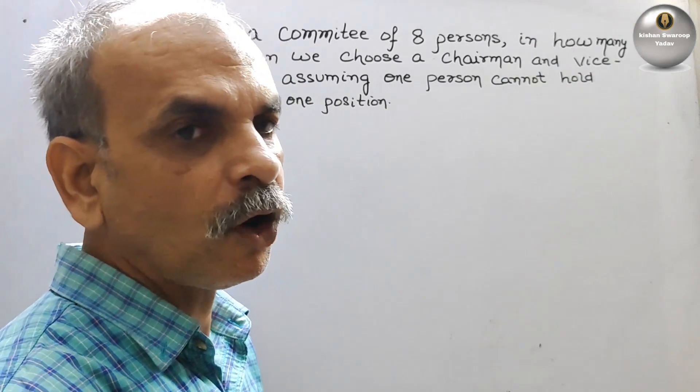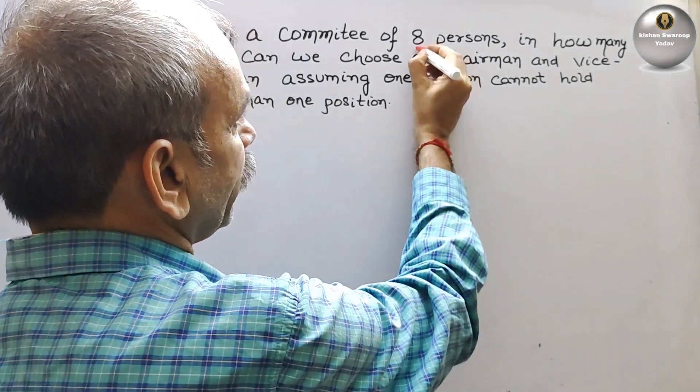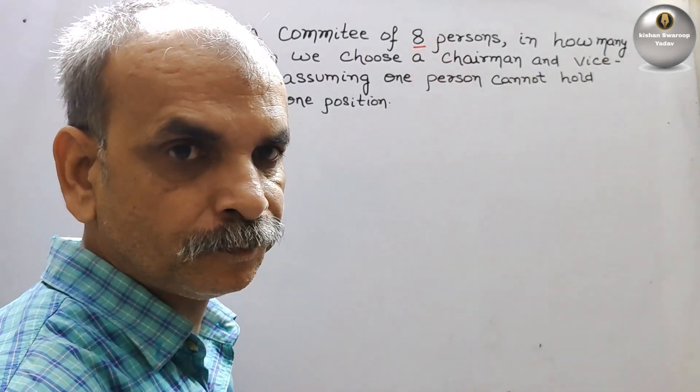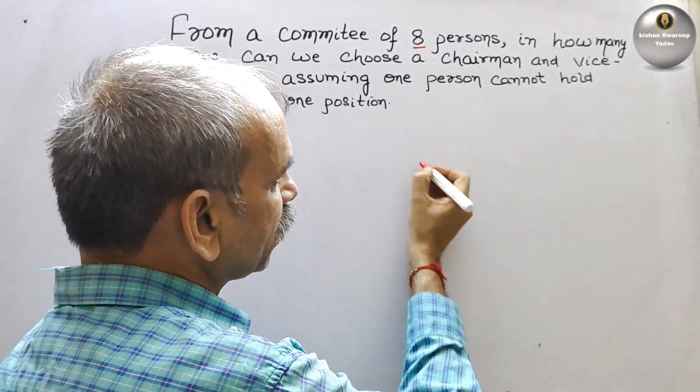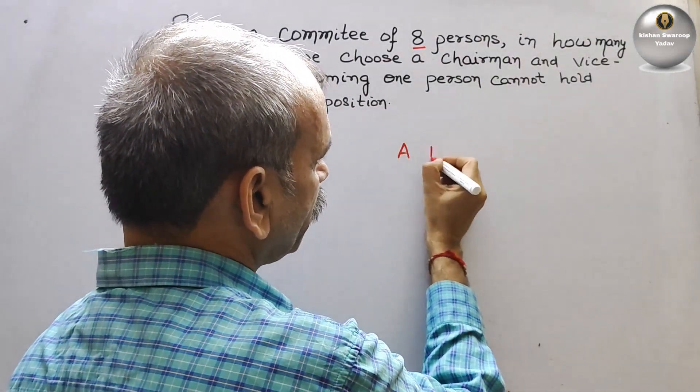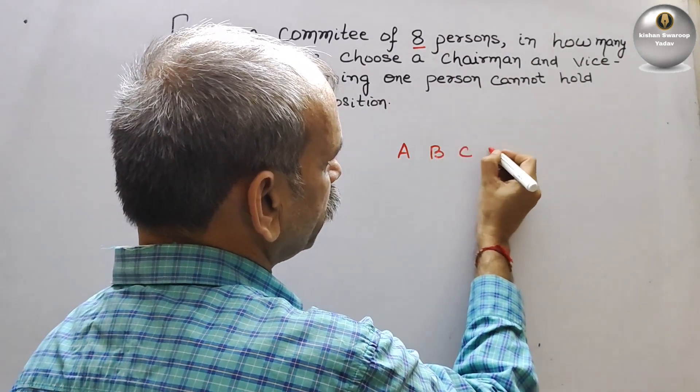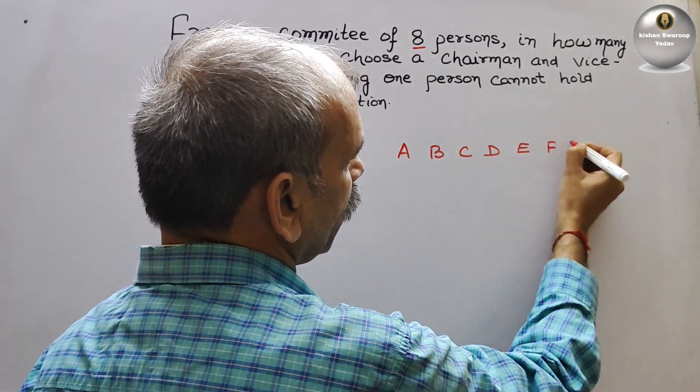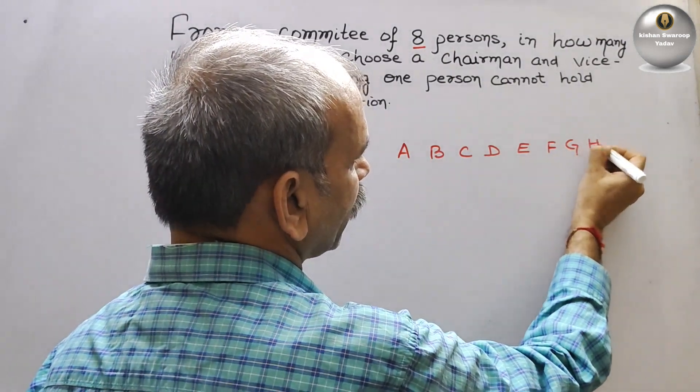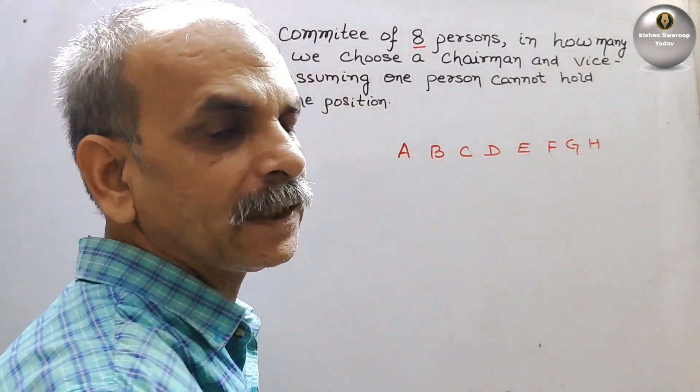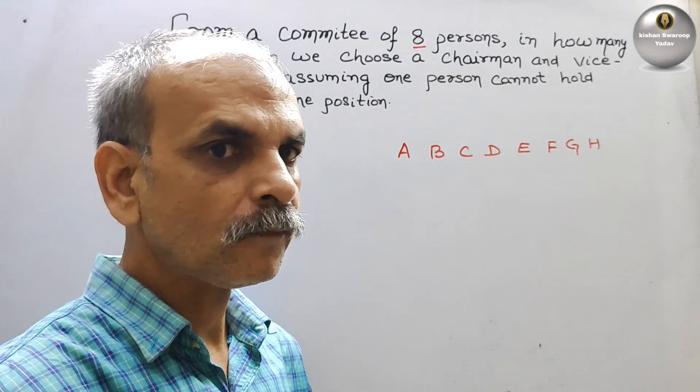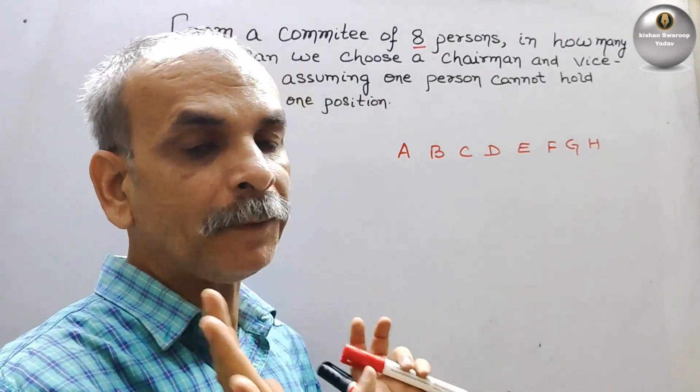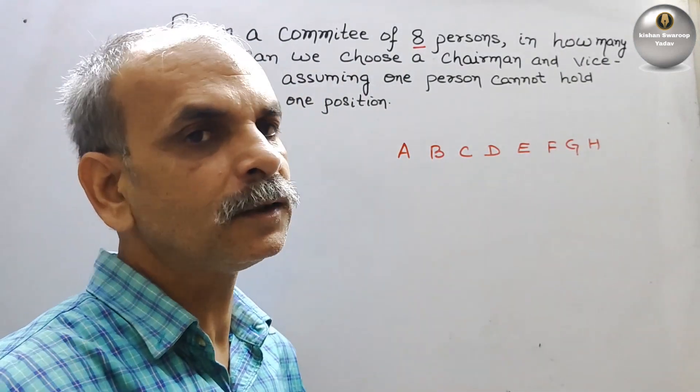So see that what they have told, they have told eight persons. So suppose the persons are A, B, C, D, E, F, G and H. These are the persons and what are the empty places they have to hold the position.